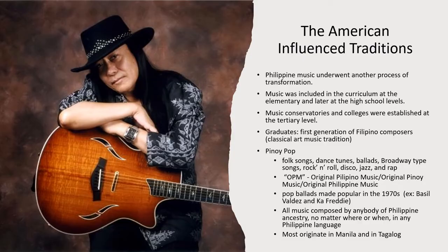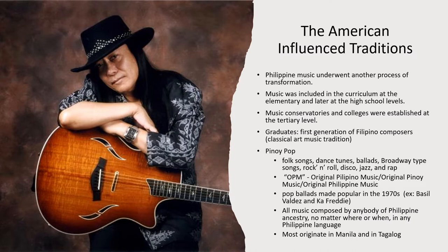Harana is a lyrical courtship style based on Mexican-Spanish traditions, while Condiman is a passionate form of Tagalog romantic song based on Spanish melodies and song structures. The American regime lasted from 1898 to 1946, during which time Philippine music underwent another process of transformation. In the newly established public school system, music was included in the curriculum at the elementary and later at the high school levels. Music conservatories and colleges were established at the tertiary level. Graduates from these institutions included the first generation of Filipino composers whose works were written in Western idioms and forms.